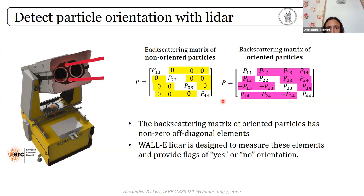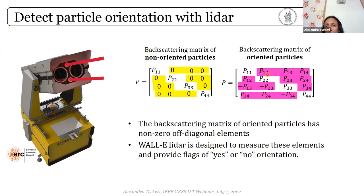Going a step back to see how we formulated the way WALL-E measures dust orientation: the interaction of laser light with aerosol particles in the atmosphere is described for non-oriented, randomly oriented particles with a diagonal backscatter matrix. Whereas for oriented particles, the matrix is not diagonal anymore — the off-diagonal elements are generally not zero. So we designed WALL-E to measure these off-diagonal elements that would provide us the information that dust particles are oriented in the atmosphere.